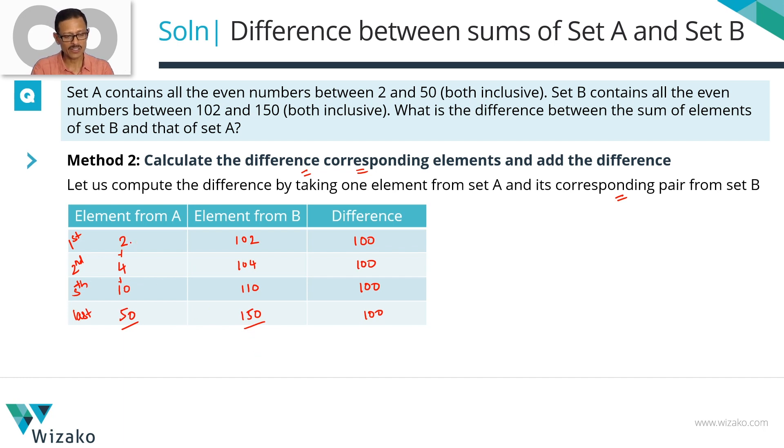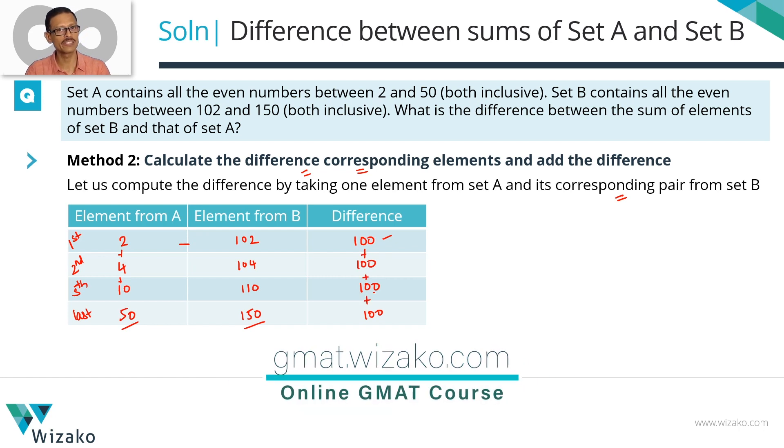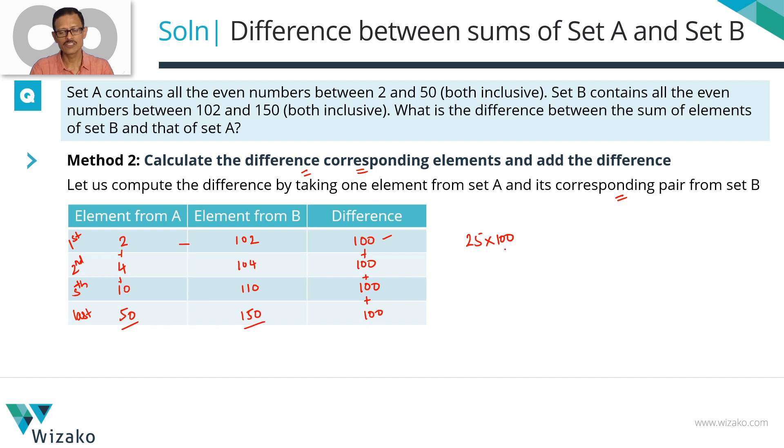In method 2, what we are doing is, we are not adding these initially and finding the difference. We are computing the difference between the second column and first column, found it to be 100. They are adding all the differences, which should also work out to be the same answer. The difference between an element of set A and its corresponding element in set B is 100. How many such elements do we have in each of these sets? We know there are 25 elements in each set. So 25 times the difference between each pair, which is 100. So the answer equals 2,500.